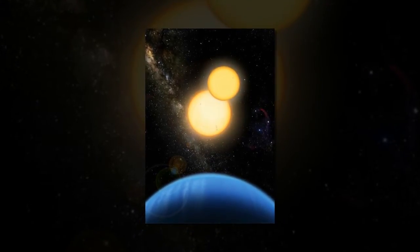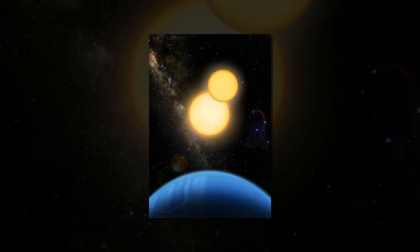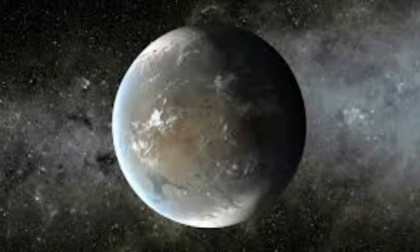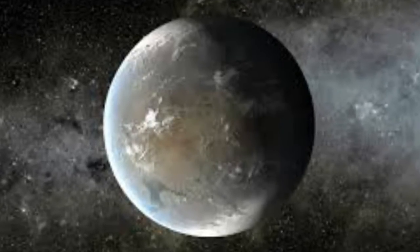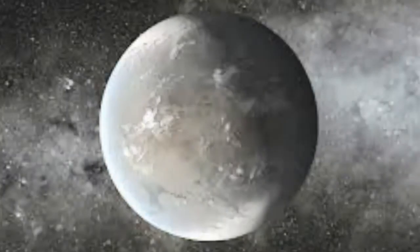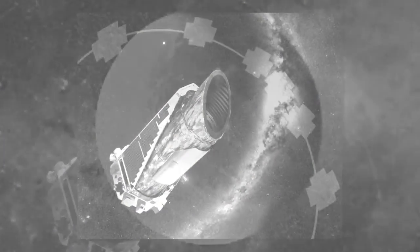The new planet, known as Kepler-453b, also presented astronomers with a surprising twist since the tilt of the orbit of the planet rapidly changes, making transits visible only nine percent of the time. The detection was a lucky catch for Kepler.